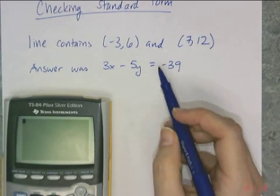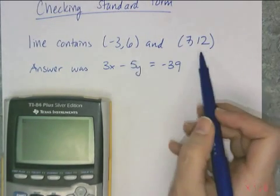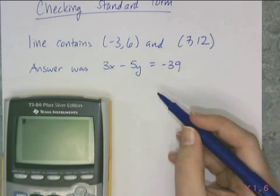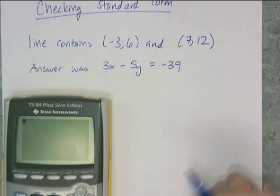You just want to be able to use the information given in the problem, the two points, the two ordered pairs, and your answer, the equation of the line, to figure out if you did everything correctly. And here's how we're going to do this.